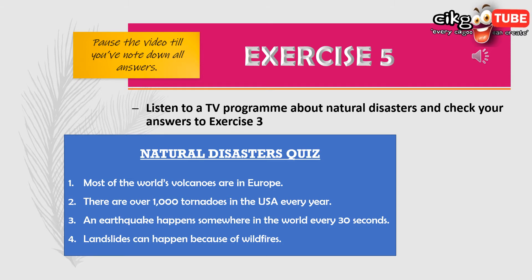Hello and welcome to Mysteries of the Earth. This week we're talking about natural disasters. Did you know there are areas of the world where more natural disasters happen than others? For example, 75 percent of volcanoes are in countries on the Pacific Ocean, like Japan and New Zealand. Most of the world's big earthquakes also happen here, and the USA has more tornadoes than any other country — over a thousand a year.